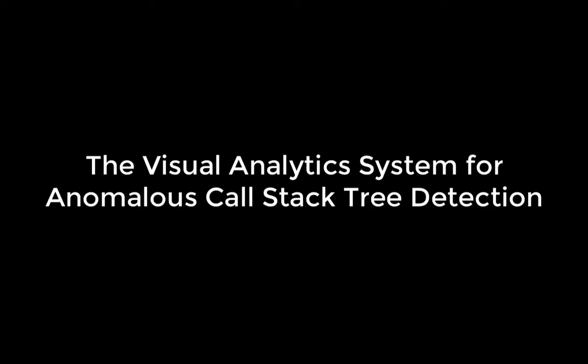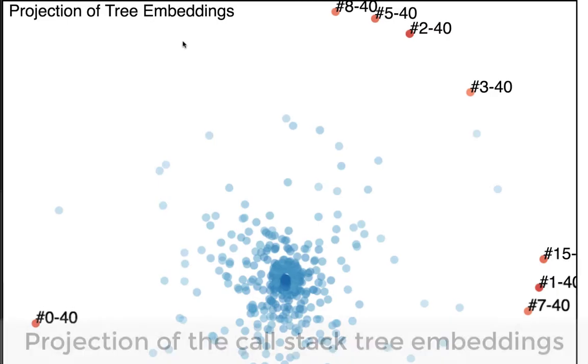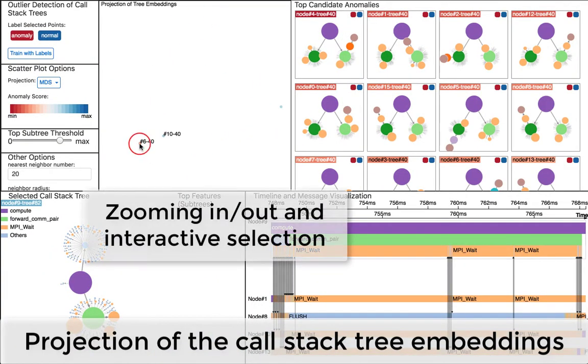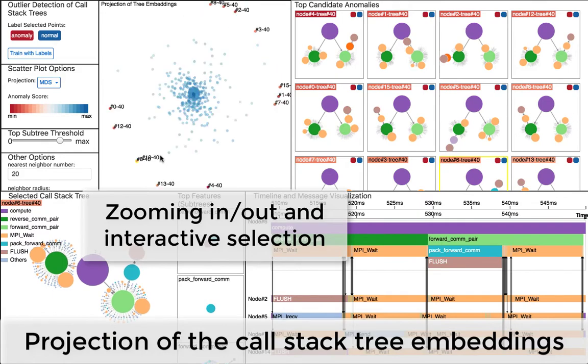In our visual analysis system, the scatter plot shows the projection of the stack2vec embeddings. For the exploration of the trees of interest, zooming in and out and interactive selection are supported.